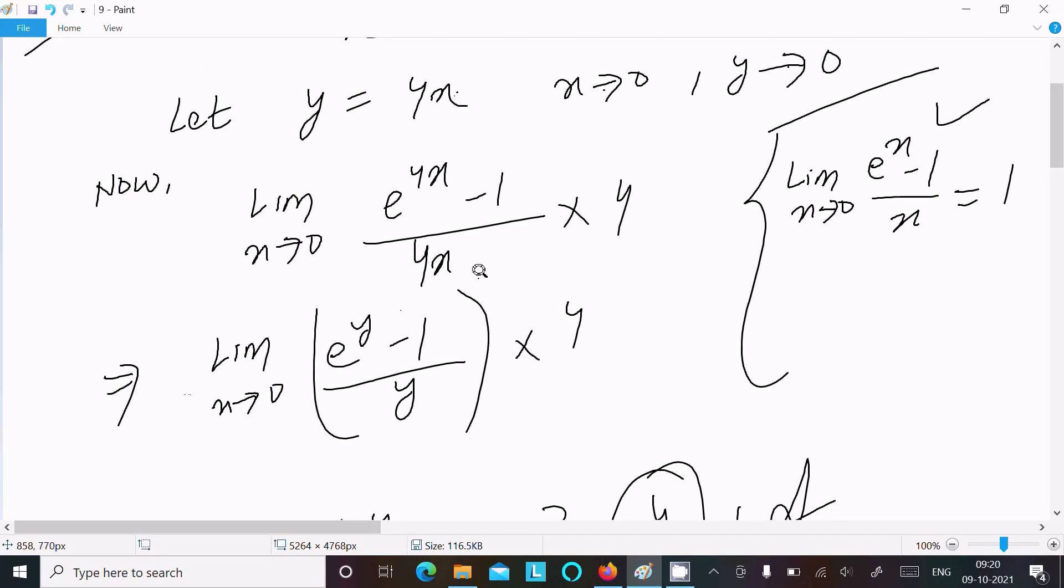Then you can get e power 4x minus 1 over 4x. Assume here y equal to 4x, so e power y minus 1 divided by y. We have the formula, you should use this. This returns 1.